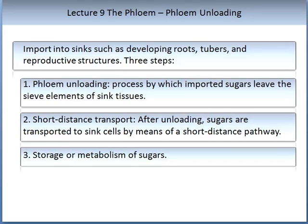Now let us look at phloem unloading. This is the process where assimilates leave the phloem into sinks such as developing roots, tubers, and reproductive structures. Again, there are three steps. The first step is phloem unloading — the process by which imported sugars leave the sieve elements of sink tissues. This is followed by short distance transport, where sugars are transported to the sink cells. The final stage is storage or metabolism of the sugars, depending on their function at that point.